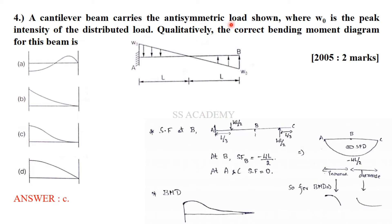A cantilever beam is subjected to an anti-symmetric distributed load where W₀ is the peak intensity. The question asks qualitatively for the correct bending moment diagram. The load intensity first decreases then increases. We need to find the shear force diagram using the relations: −W(x) = dF(x)/dx and F(x) = dM(x)/dx. At point B (the midpoint), the shear force is −WL/2.